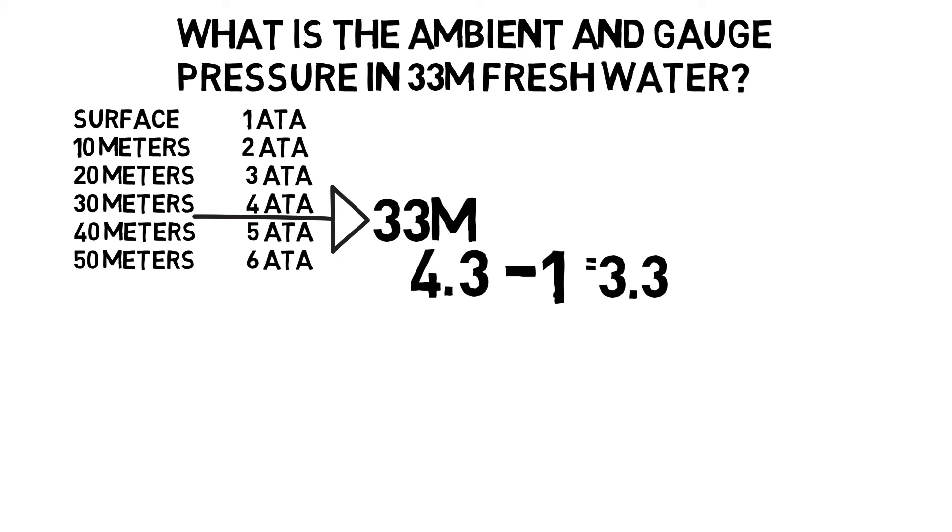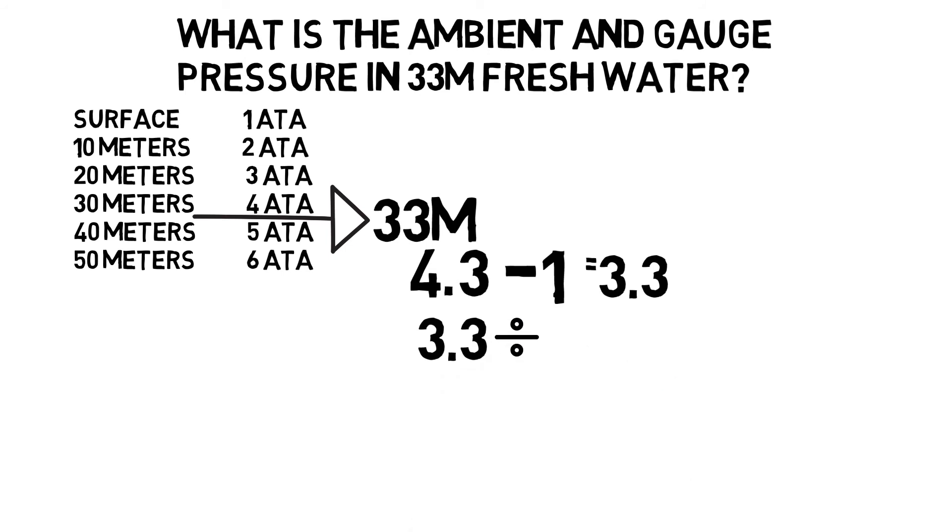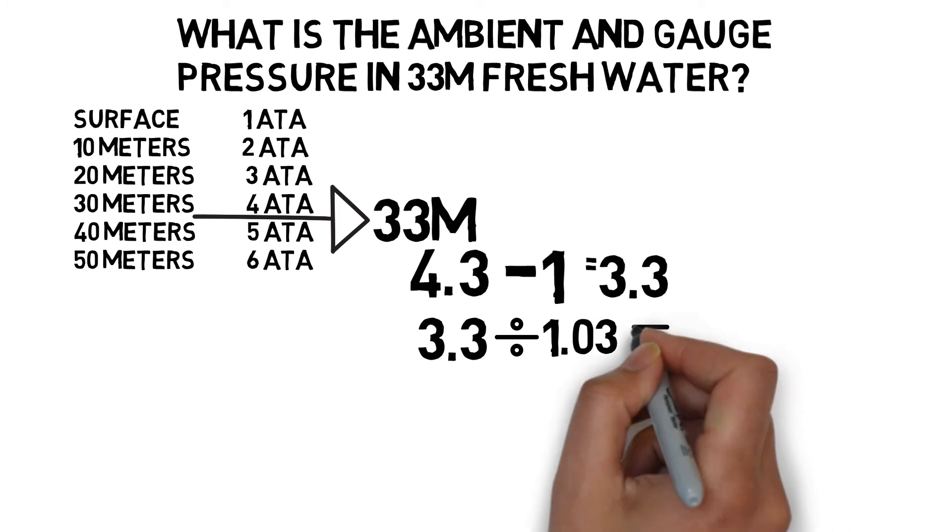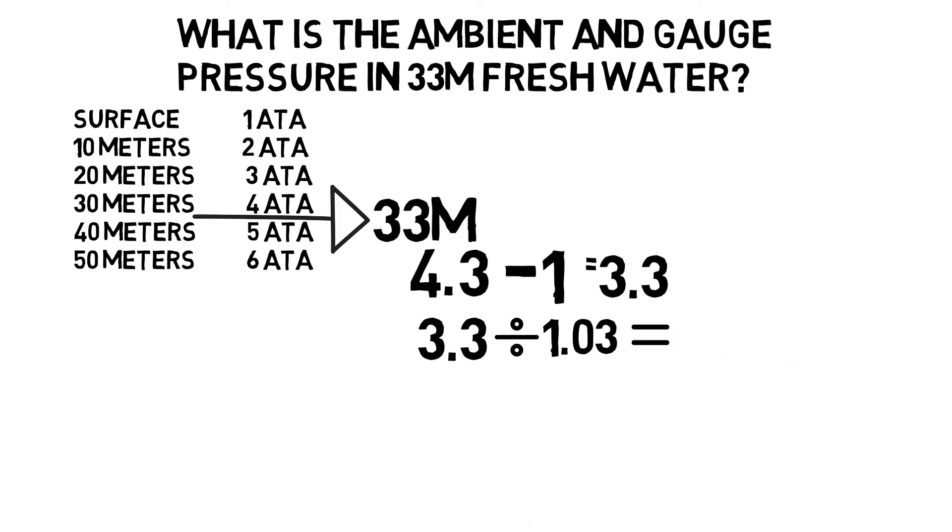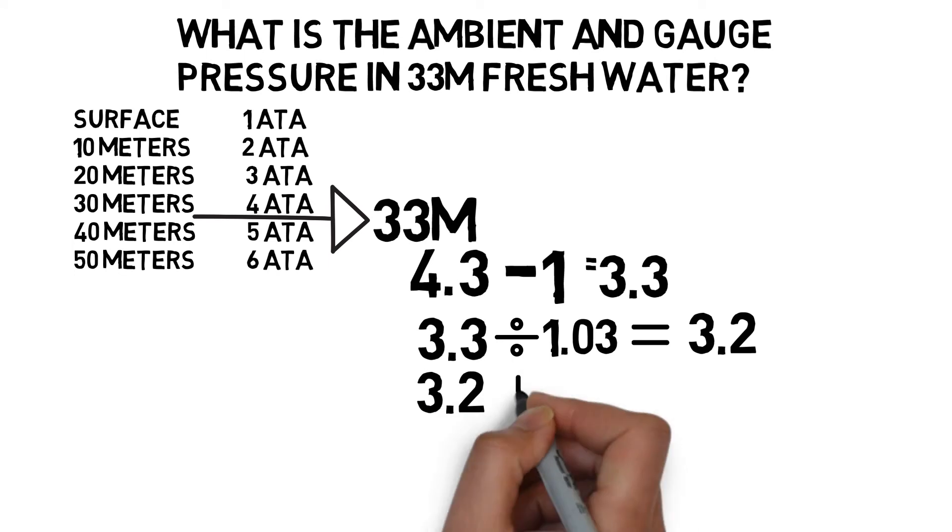That's the ambient pressure in salt water. So now we need to subtract one, giving us 3.3 atmospheres. And then we need to divide that 3.3 atmospheres by 1.03 to deal with the fact that fresh water weighs slightly less than salt water.